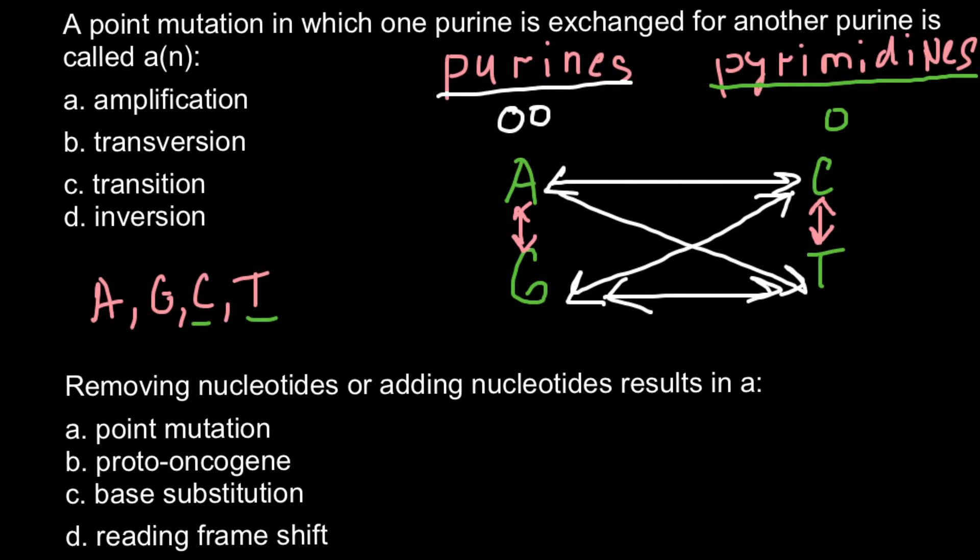This would be transition. The same is here. When one pyrimidine would be substituted with another pyrimidine, we would have transition. But when one pyrimidine would be substituted with another purine, we would have transversions.